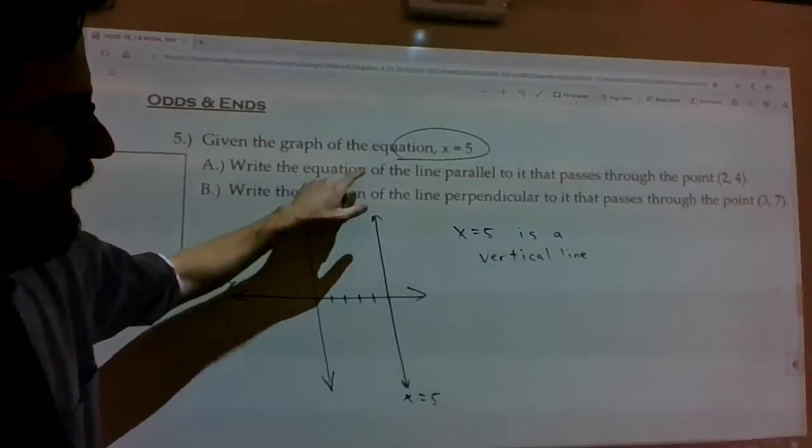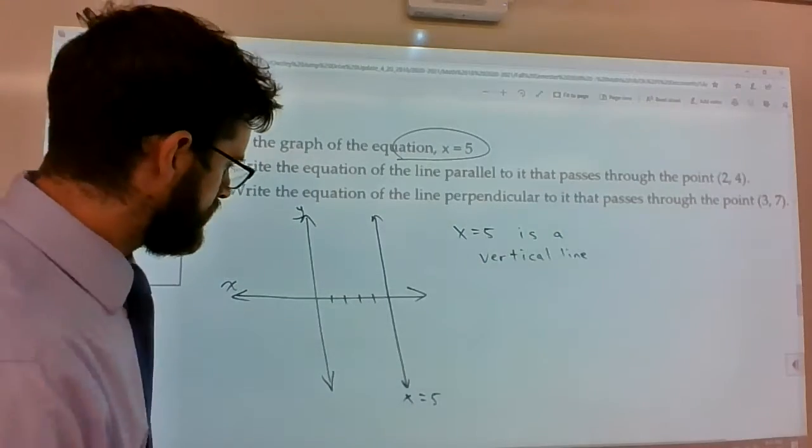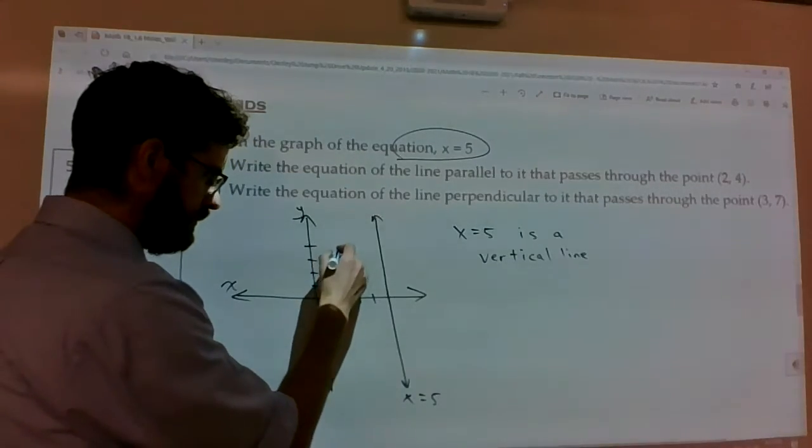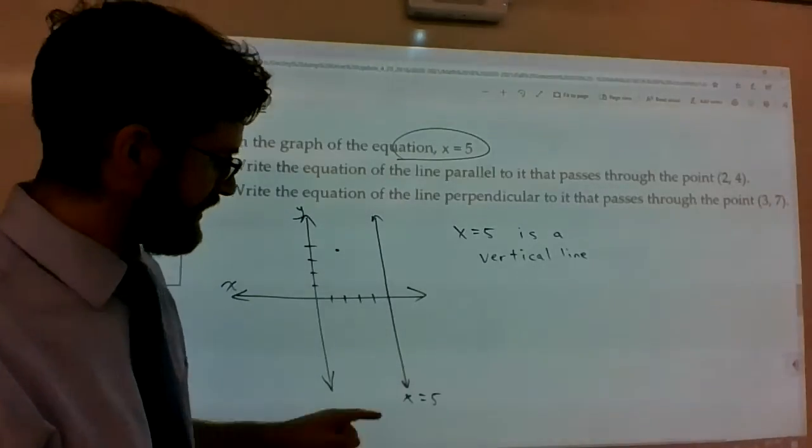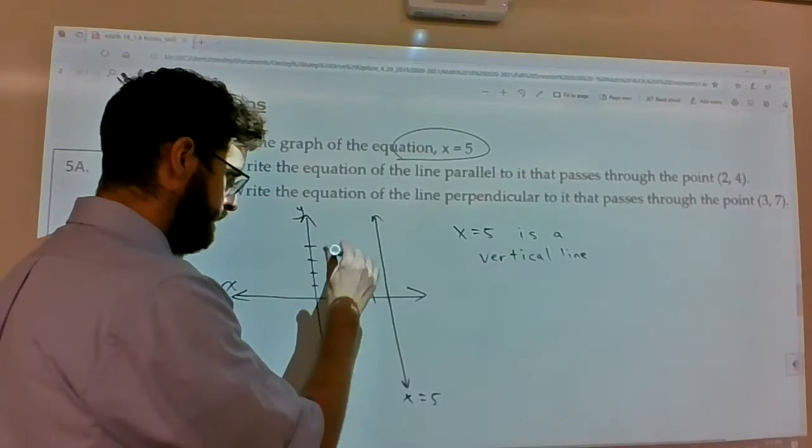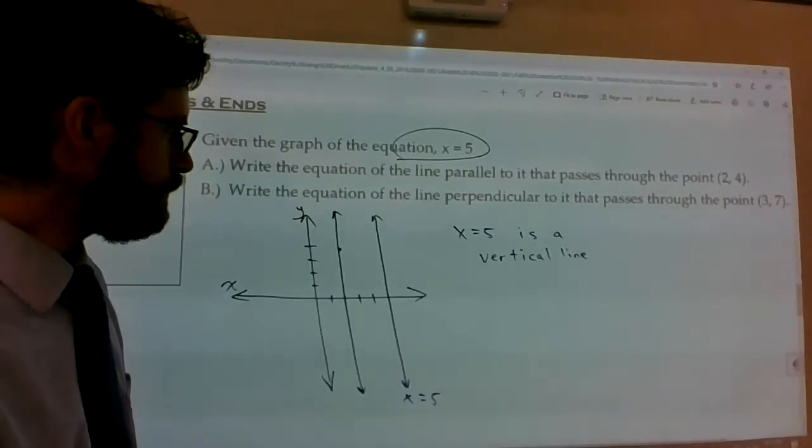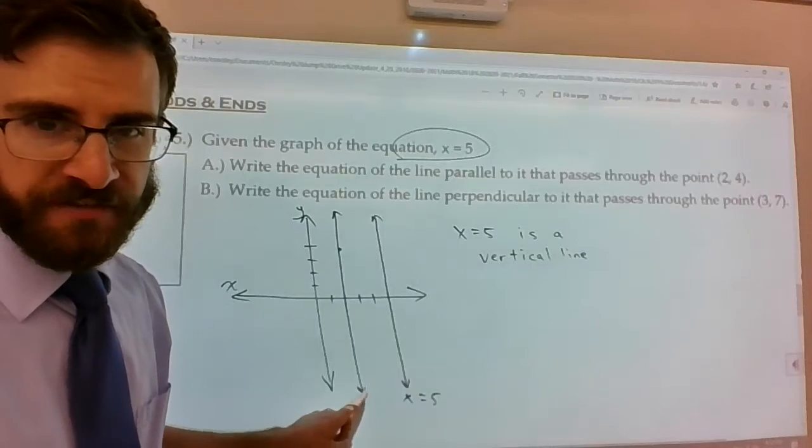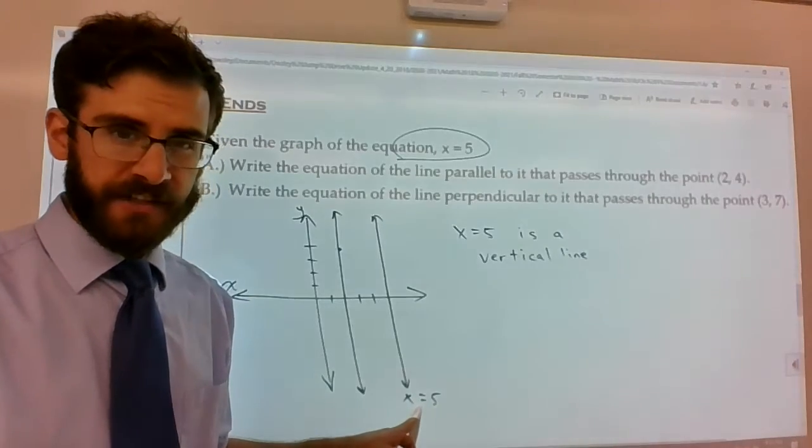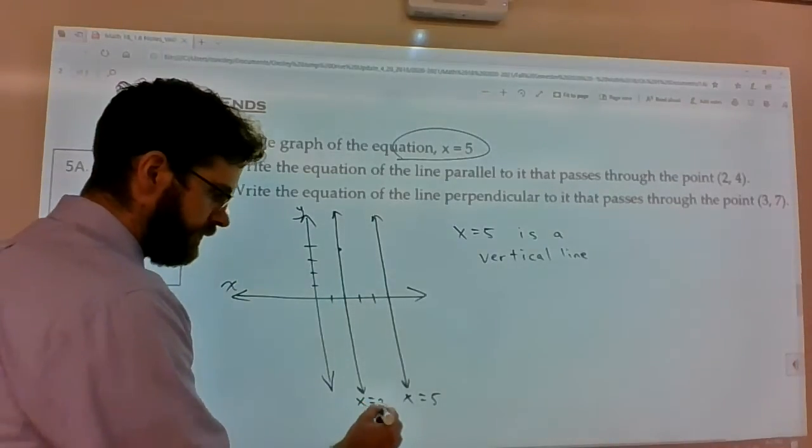What would the line parallel to it that also passes through the point 2, 4 look like? Okay, so here's the point 2, 4. It's got to be parallel to that, which means it's got to be another vertical line. So my question to you guys is what's the equation of this line here? If this vertical line is x equals 5, this vertical line is going to be x equals 2. And that's your answer.